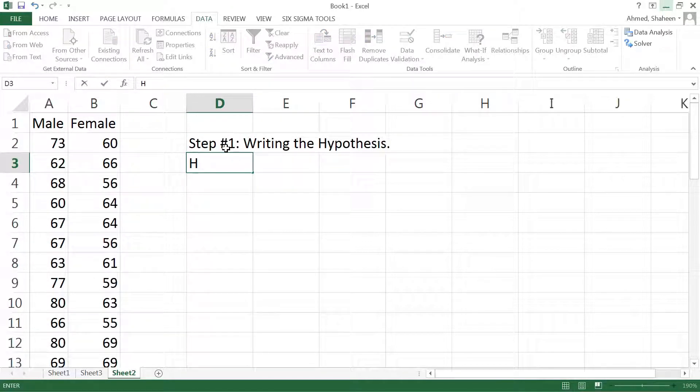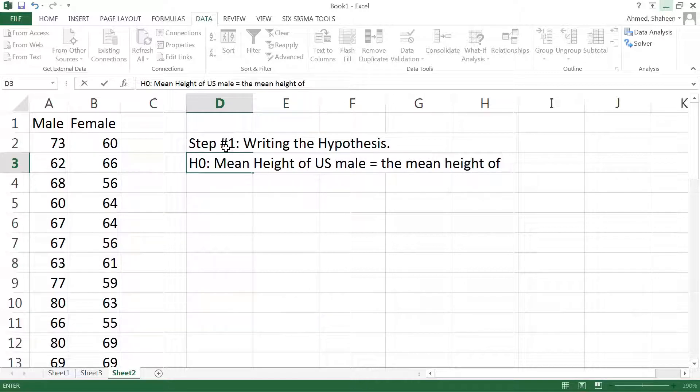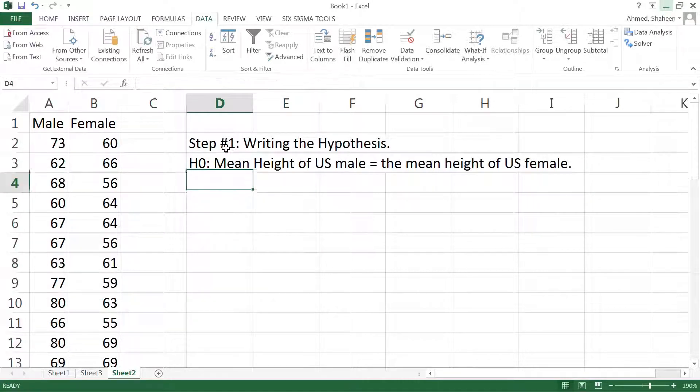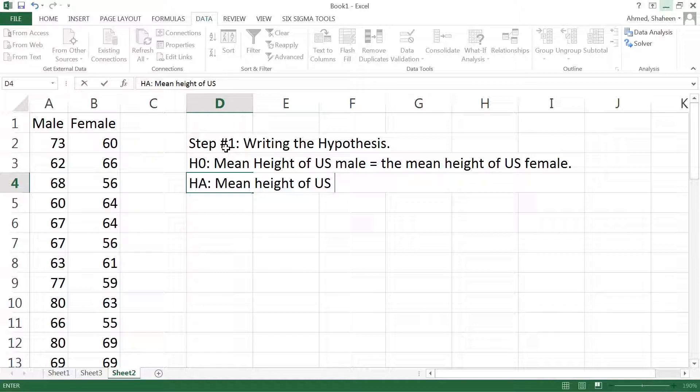As you know, there are two hypotheses: null hypothesis and alternative hypothesis. So we can write the mean height of U.S. male is equal to the mean height of U.S. female. And then the alternative would be the mean height of U.S. male is more than the mean height of U.S. female.